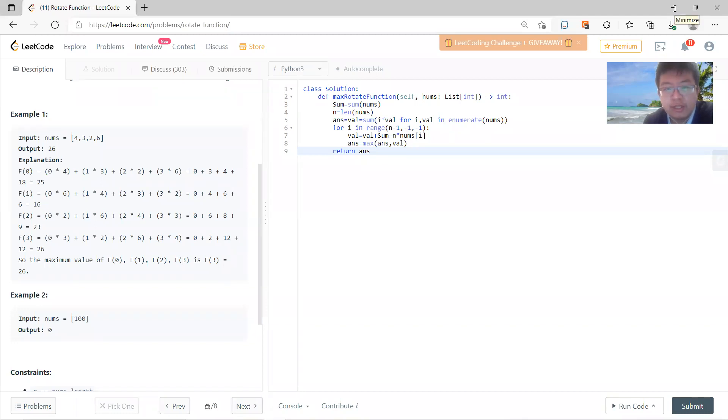It's very easy. Define S, which is the sum of everything, and the length. First compute f(0), initialize the answer to be f(0), and there's a value which is f(0). Then you go back, and for each turn, your value equals value plus sum minus n times this.